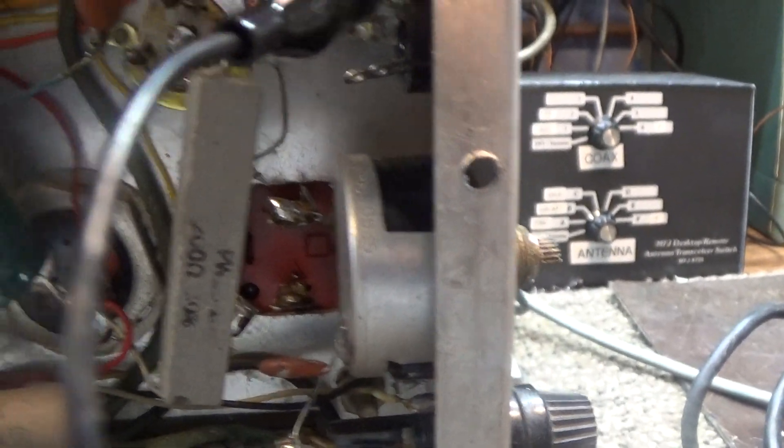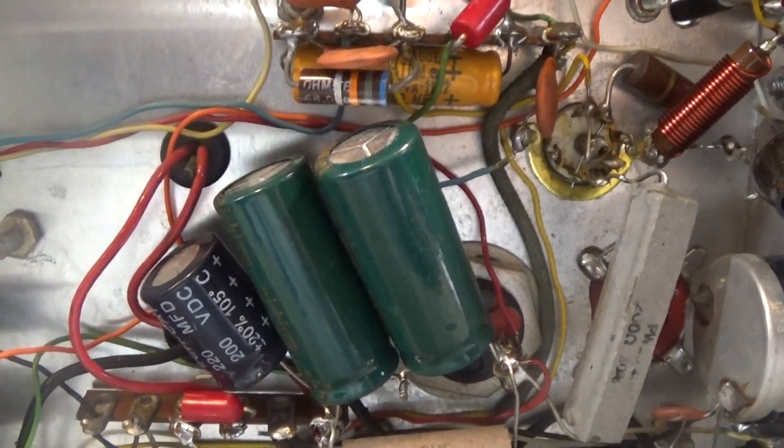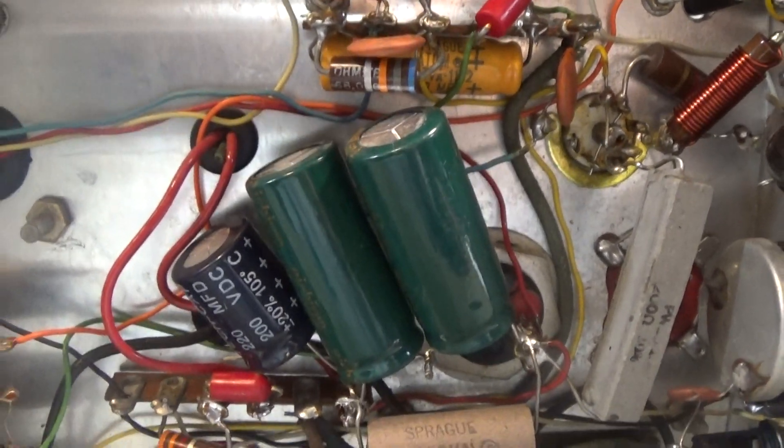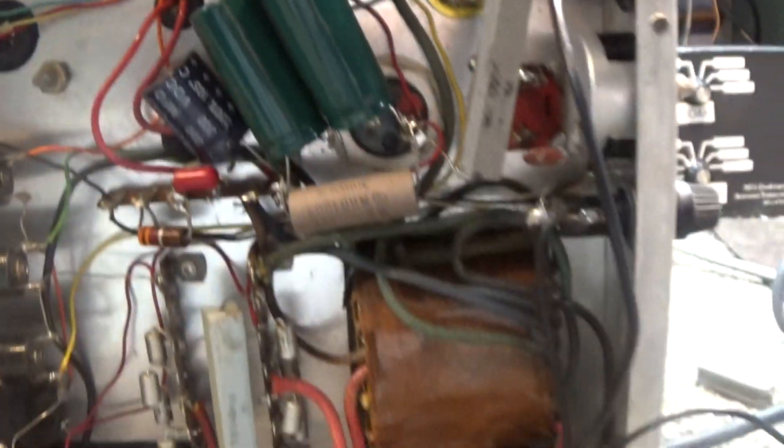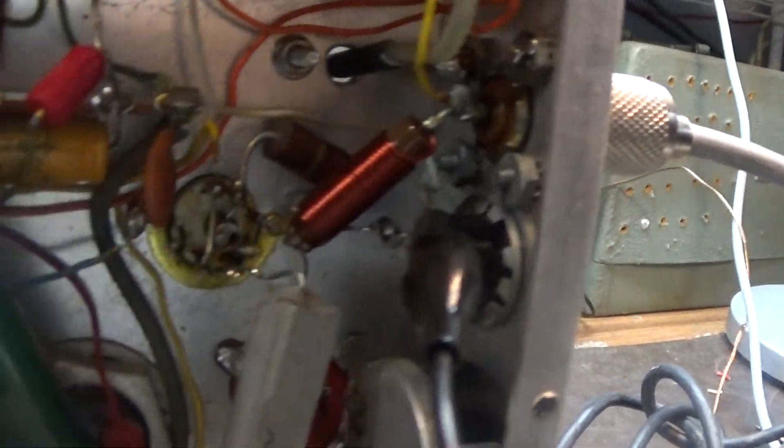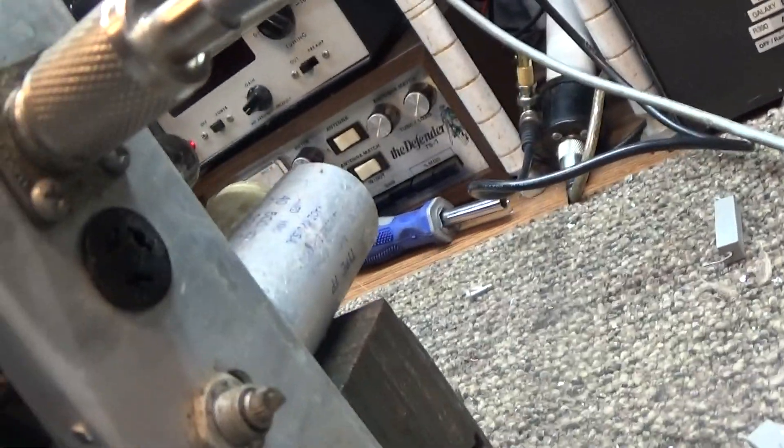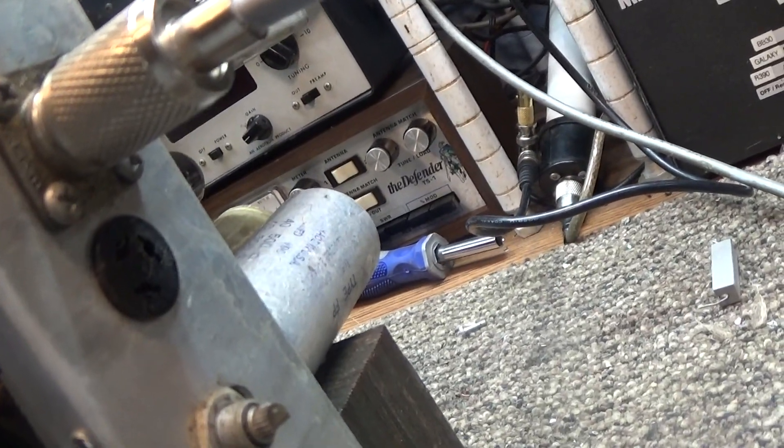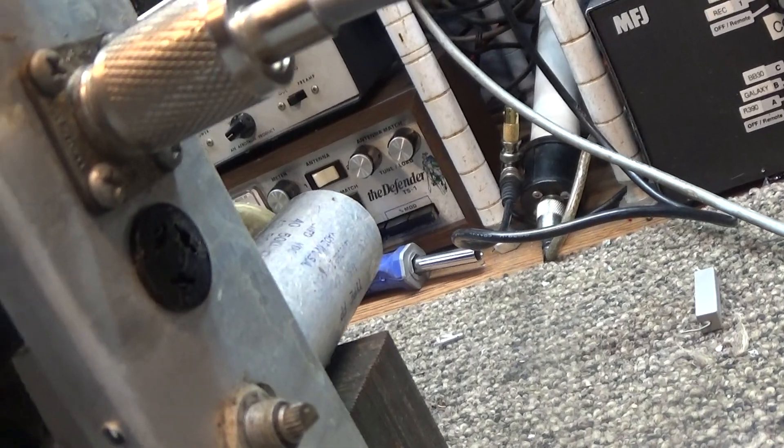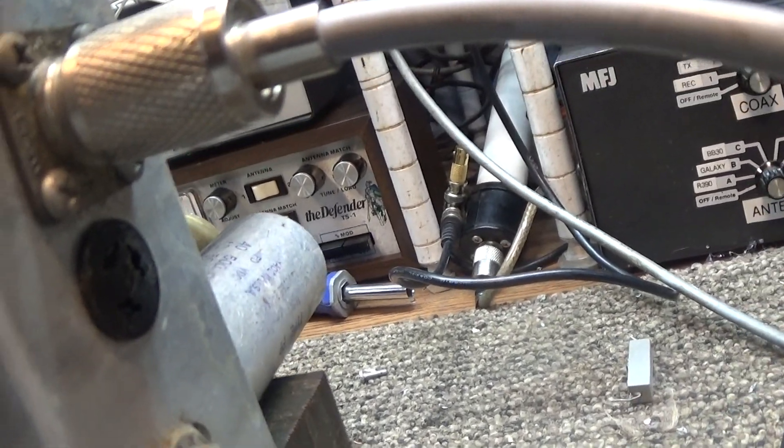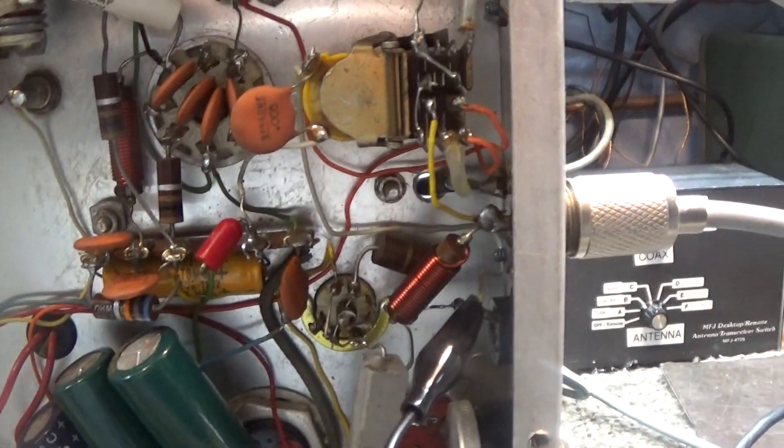Also, this amp does not have a key-in circuit. You key it up with a foot switch with this jack on the back. If I was gonna keep it, I'd probably put an RCA type jack on there or an automatic key-in circuit. But since I'm getting rid of it on the cheap, I'm just gonna get rid of it as is.